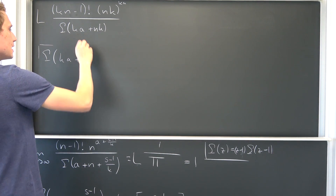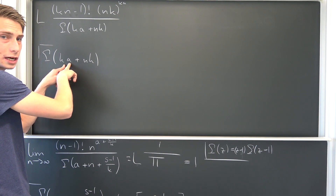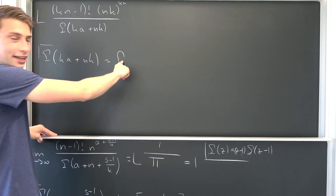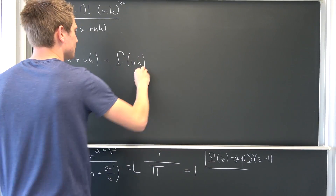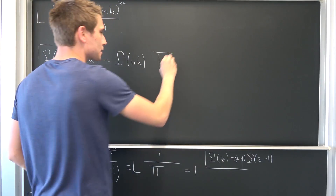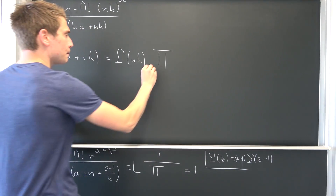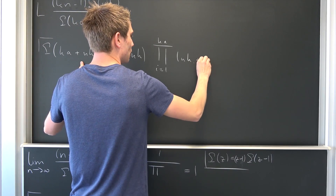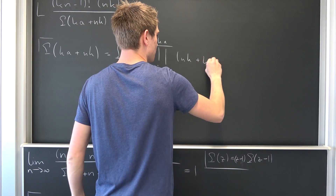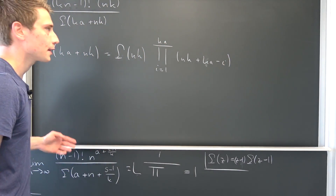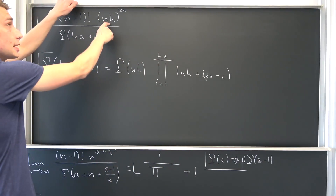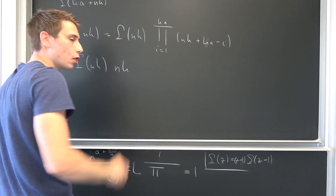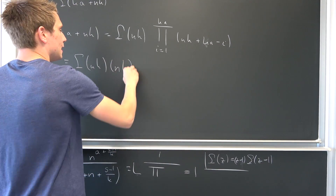The denominator is k times a plus n times k. We are going to iterate our gamma function recurrence relation exactly k times a times, because this is going to leave us with — by the same argumentation as before — gamma of n times k, which cancels with k times (n − 1) factorial up there. The product runs from i = 1 to k times a, and the general term is n times k plus k times a minus i.